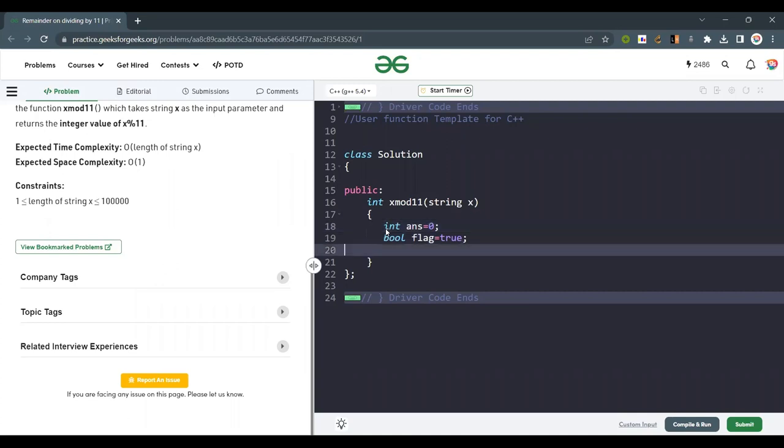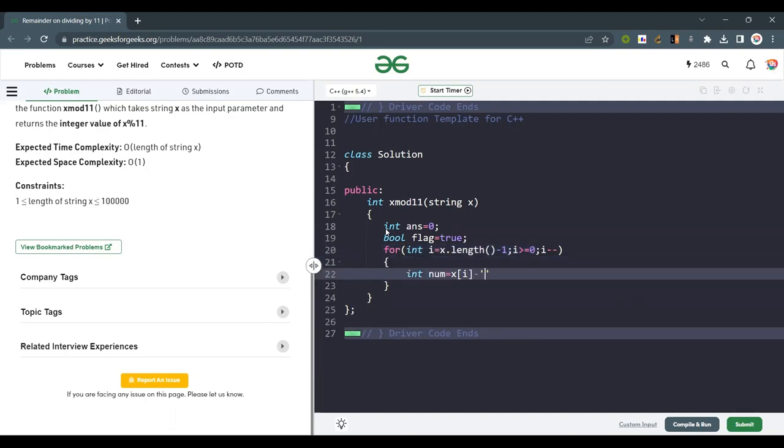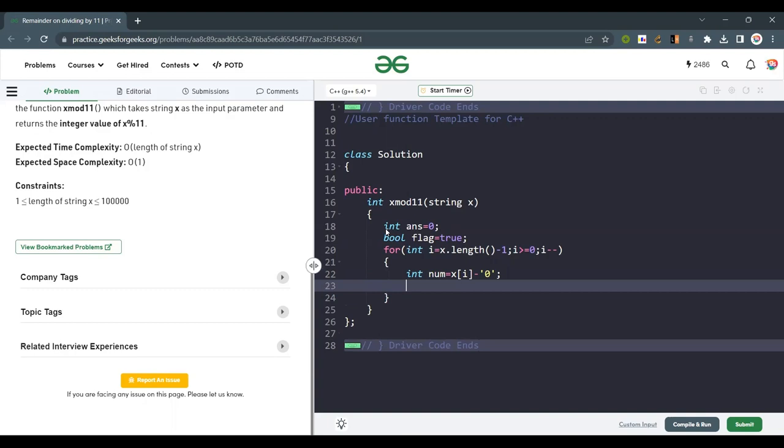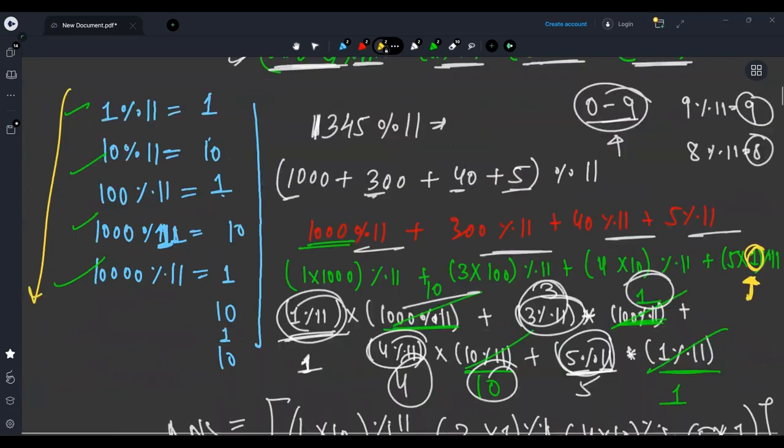I will start from the back, as I said, so that I can get this 1, 10, 1, 10 pattern. I iterate from the end and the current number equals X[i] minus '0' because currently in a string it is a character, so we'll subtract it by '0' to get a digit. Now if my flag is true, that means the pattern is 1. So answer equals answer plus the number as it is. This 1 will not make any effect. Just add the digit as it is and modulo 11.